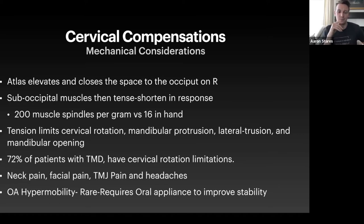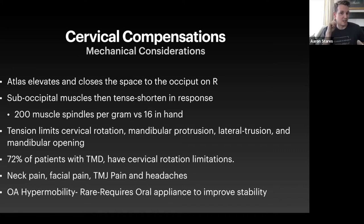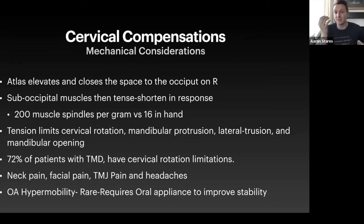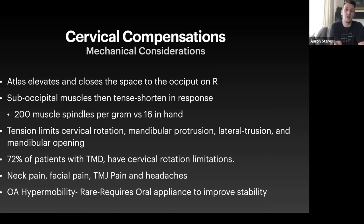This suboccipital tension is associated with neck pain, facial pain, TMJ pain, and headaches. Common compensation patterns include limited cervical rotation, limited mandibular protrusion, lateral protrusion to either side, and limited mandibular opening. Every so often this area becomes hypermobile rather than tight — a rare compensation pattern I've seen maybe once in my career — in which case a dental orthotic can help create stability there. This is another way PT and dental professions can collaborate for great outcomes.